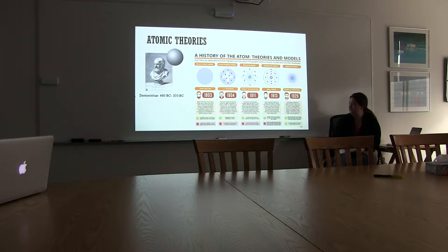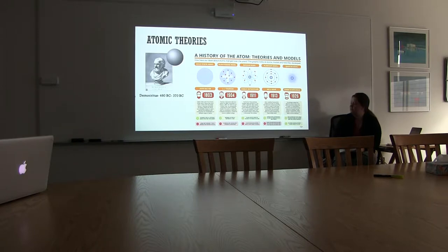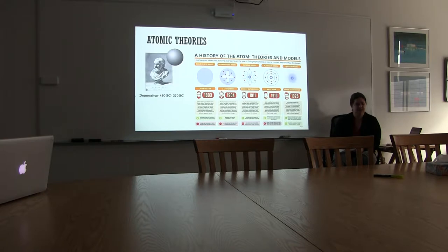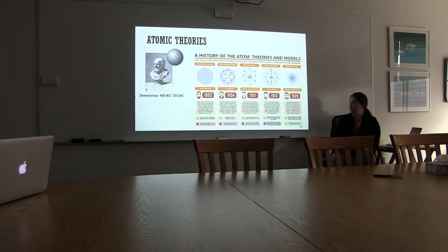Then J.J. Thomson came along — and I really liked his name, J.J. He did an experiment called the cathode ray tube experiment, and he found electrons — negatively charged particles. He didn't really know where the electrons were in the atom; he just knew that they were there. Which was really cool and a really fun experiment.